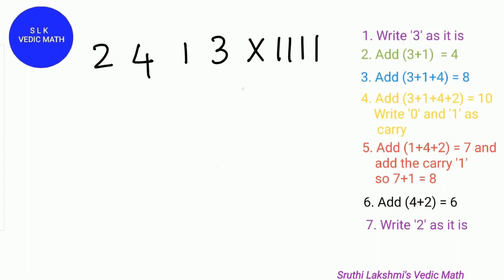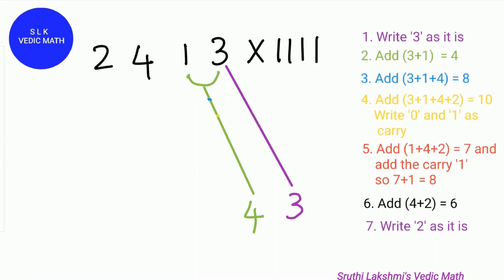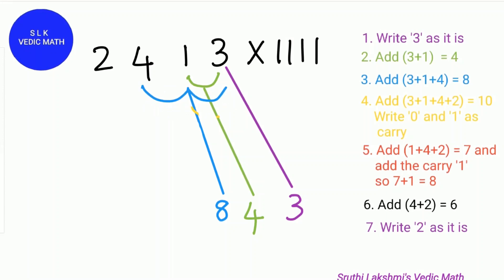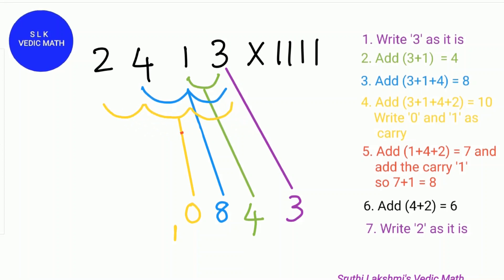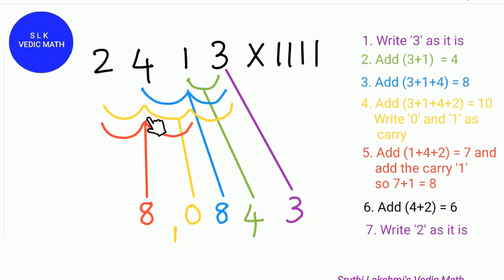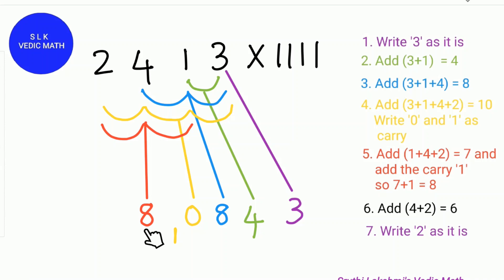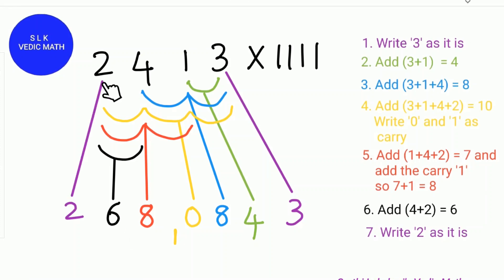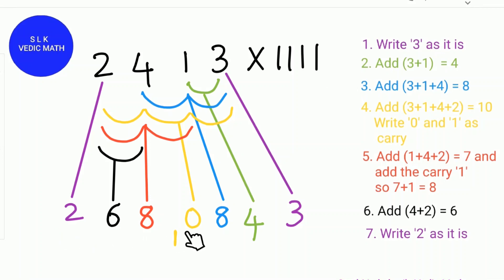First, write the last digit 3 as it is. Next, add 3 plus 1, which is 4. Then add 3 plus 1 plus 4, which is 8. Then add 3 plus 1 plus 4 plus 2, which is 10 — write down 0 and carry the 1. Next, add 1 plus 4 plus 2, which is 7, plus the carry 1 is 8. Then add 2 plus 4, which is 6. Now write down the first digit 2 as it is. So 2413 times 1111 is 2,680,843.